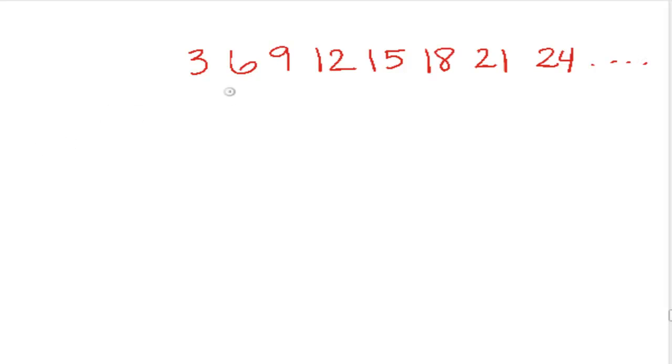Multiples of 7 would be 7, 14, 21, 28, etc. So the least common multiple, or the smallest number that they have in common, would actually be all the way up here at 21.